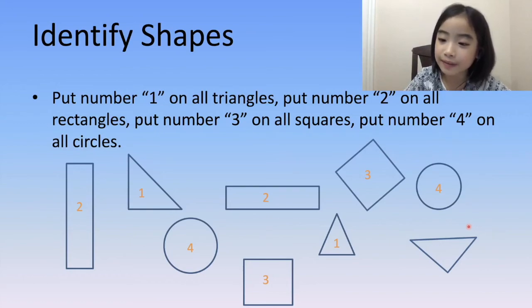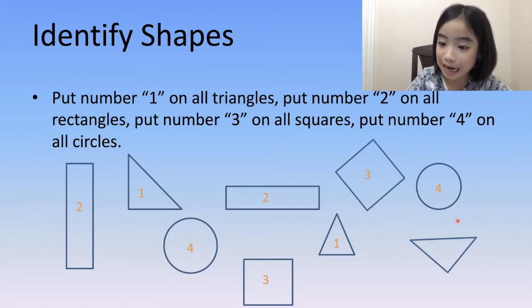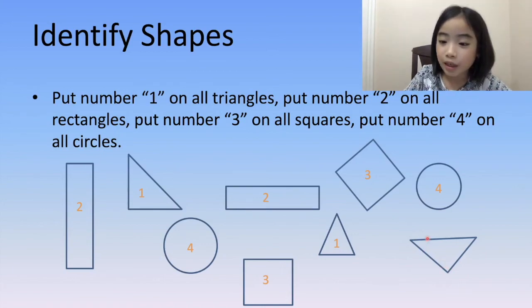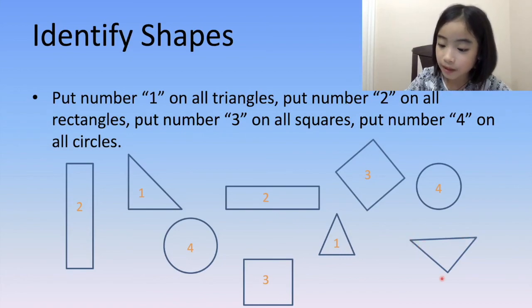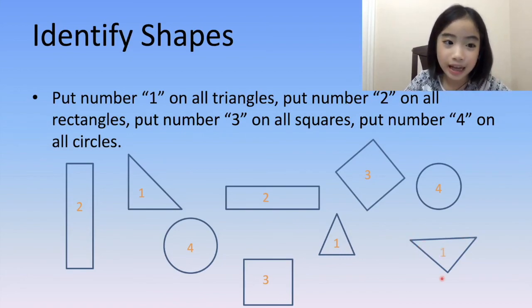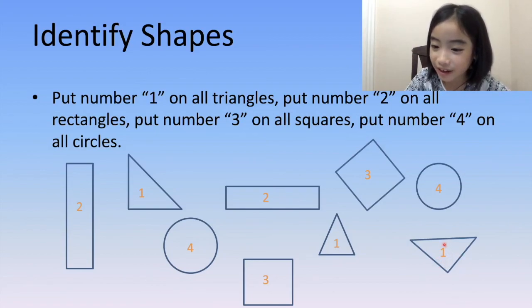Now, let's look at this last shape down here. It has three sides and three corners, so it is a triangle. Let's put the number one on this triangle.